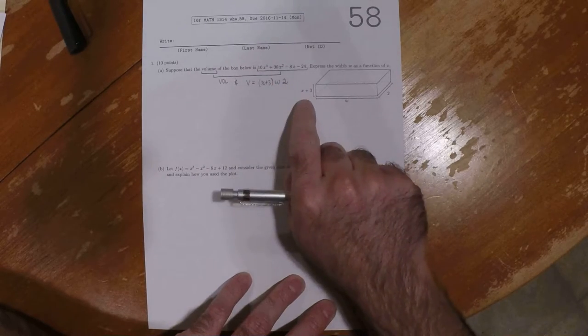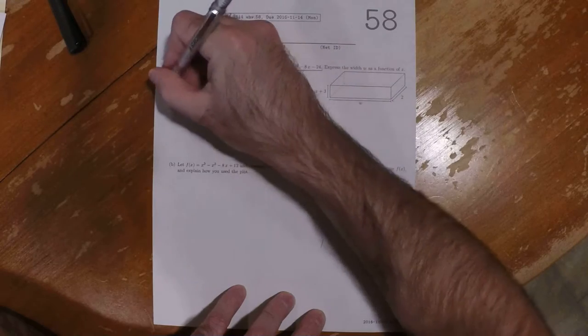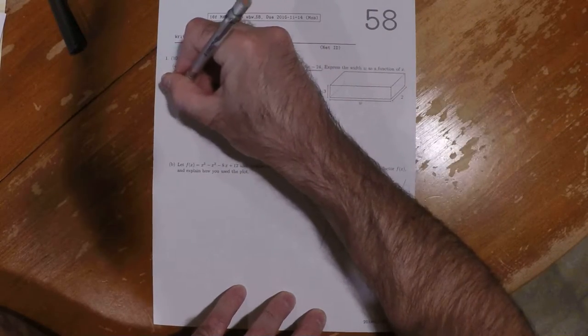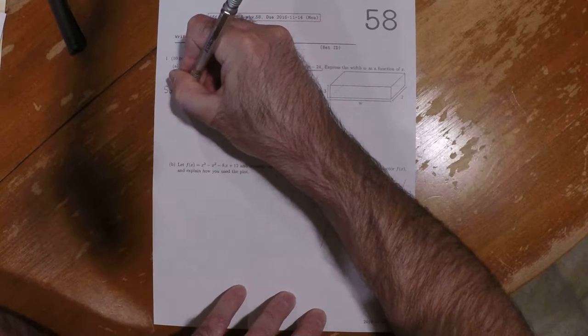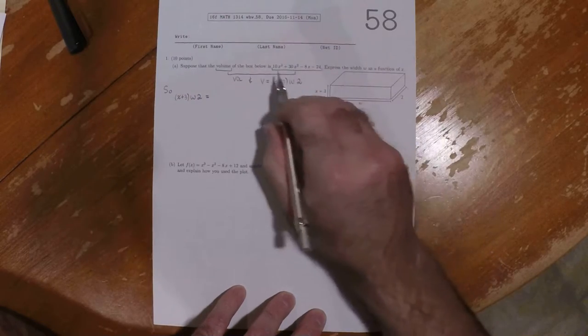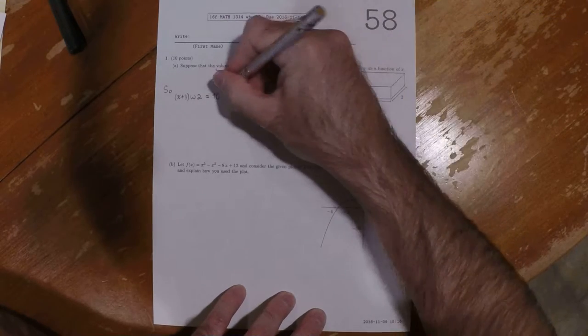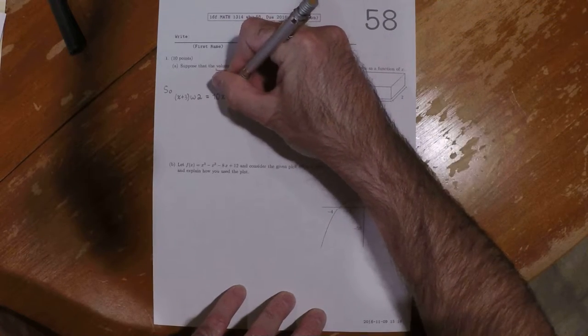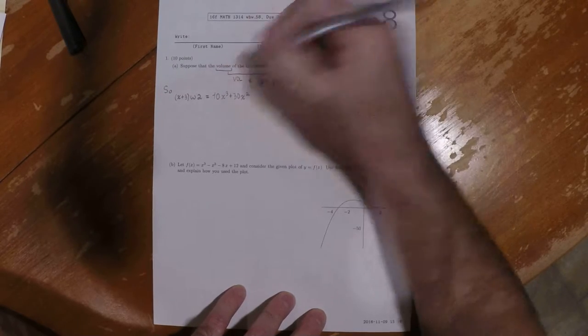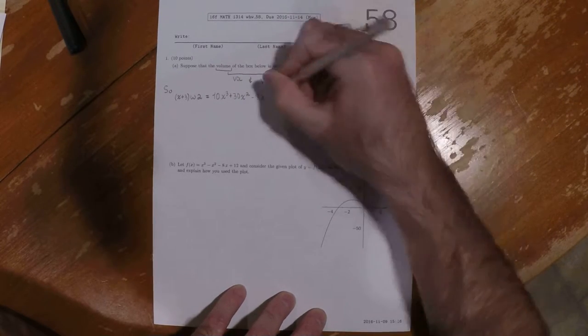So we want to express w as a function of x, a simplified function of x. So we know that x plus 3 times w times 2 is equal to all of that. So 10x cubed plus 30x squared minus 8x minus 24.